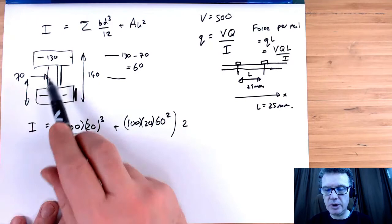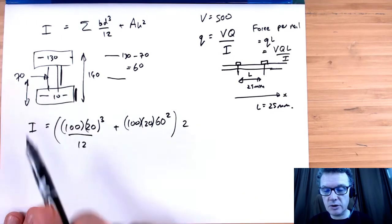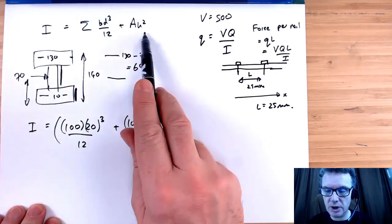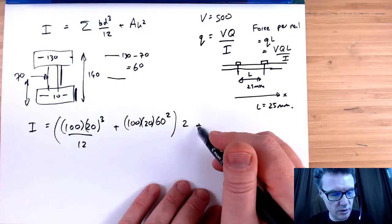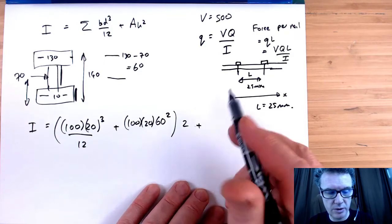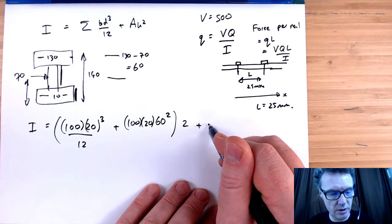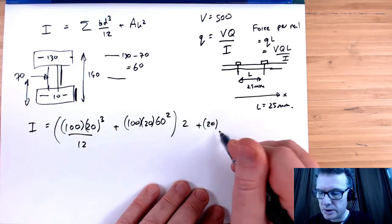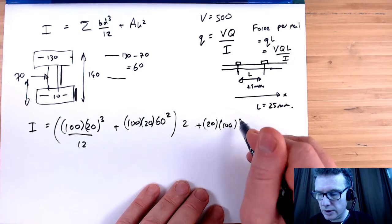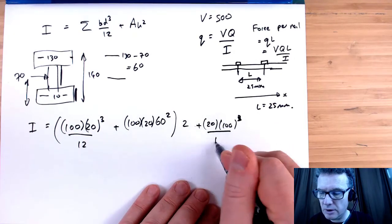I'm going to have two of them, top and bottom. It's symmetric. If you want you can repeat the exercise for the bottom. Then the middle section goes through the neutral axis, so we have no H value. We've just got the breadth is 20, and the height is 100 this time. 20 and 100 have switched round, to the power of 3 over 12.